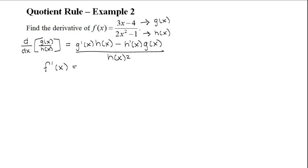To do it all at once, you take the derivative of the first function, which is 3, multiply it by the second function, 2x² - 1, subtract the derivative of the bottom function, which is 4x, and multiply that by the top function, 3x - 4, then divide it all by the bottom function squared.